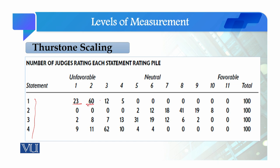Looking at statement two, there is a variation in how judges rated it. Looking at statement three, there is also variation. In statement four, there are a lot of people — sixty-two people ranked it as a three. Then there is a median value towards a low score. So if we look at statement three, we will collect the median value.